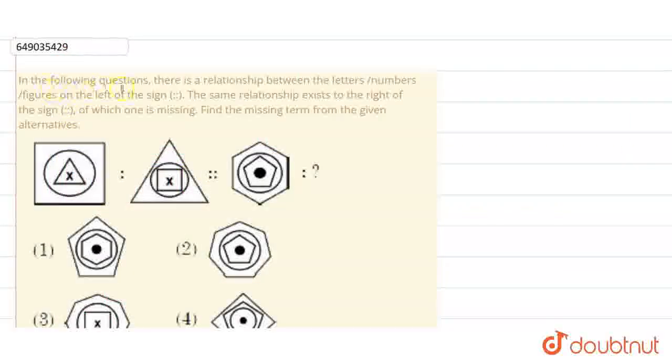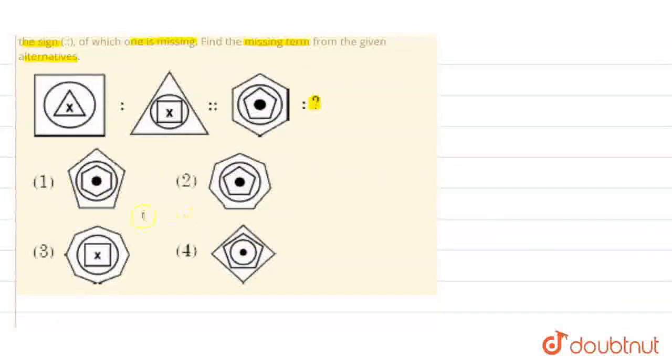Hello students, the question is: in the following question, there is a relationship between the letters, numbers, or figures on the left of the sign. The same relationship exists to the right of the sign of which one is missing. Find the missing term from the given alternatives.